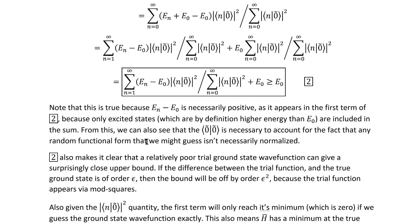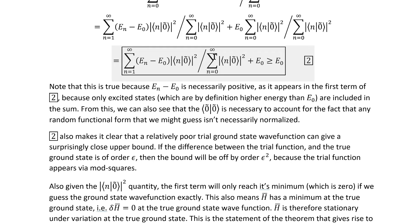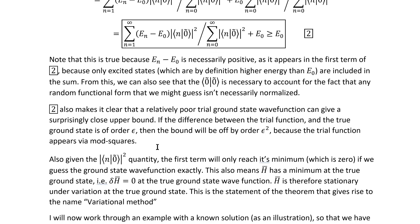From the last few steps we can also see that the quantity in the denominator is necessary to account for the fact that any random functional form we might guess isn't necessarily normalized. The form of this term also makes it clear that a relatively poor trial ground state wave function can give a surprisingly good upper bound. If the difference between a trial wave function and the true ground state is of order epsilon, then the upper bound will be off from the true ground energy by epsilon squared, because the trial function enters via mod-squareds.